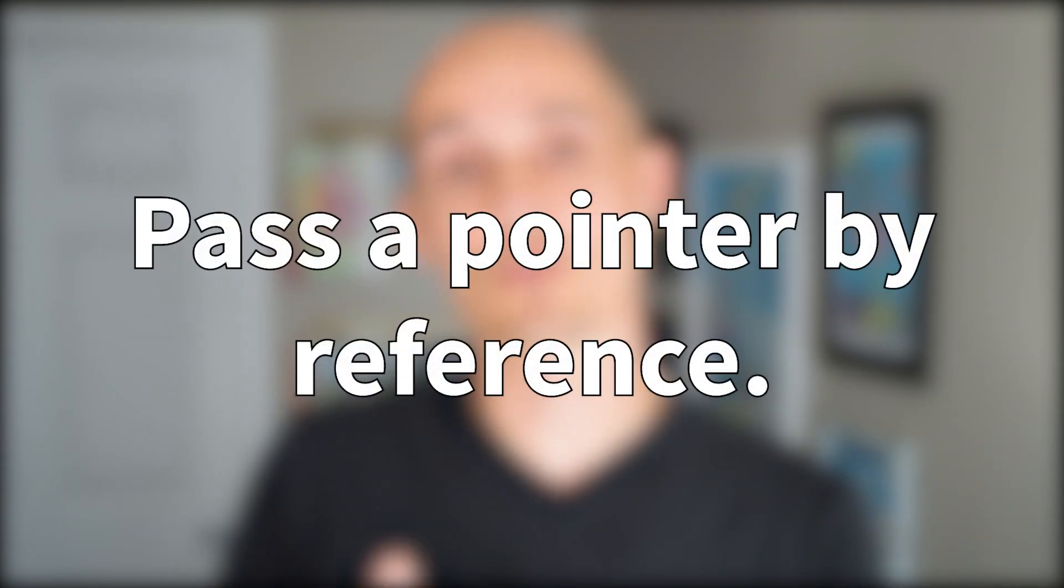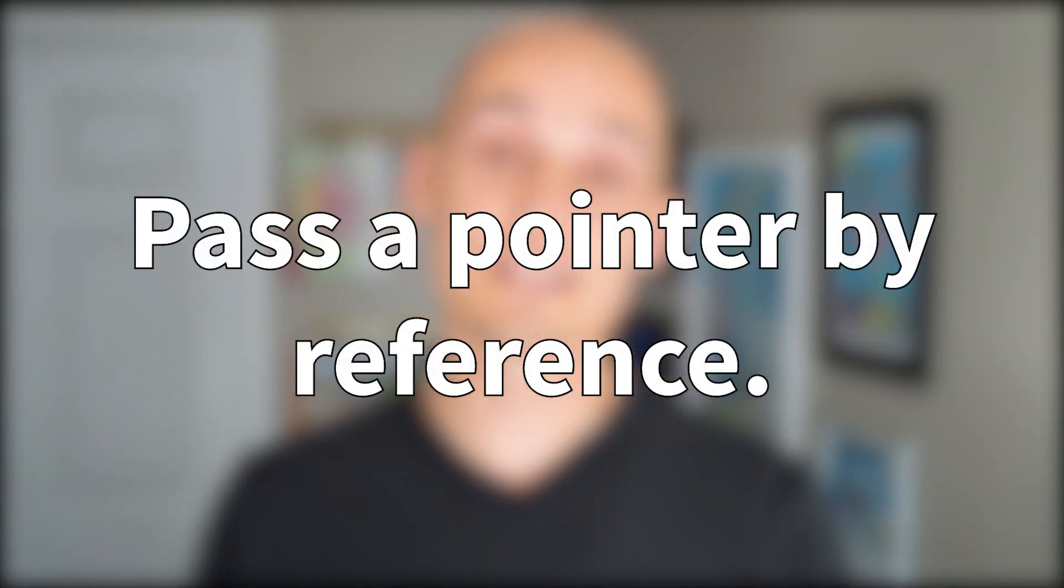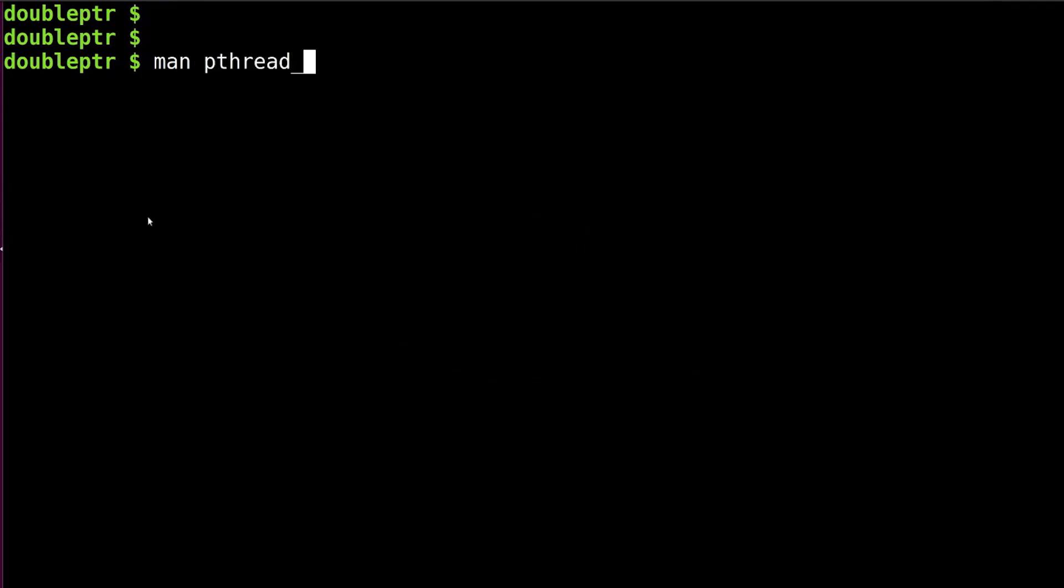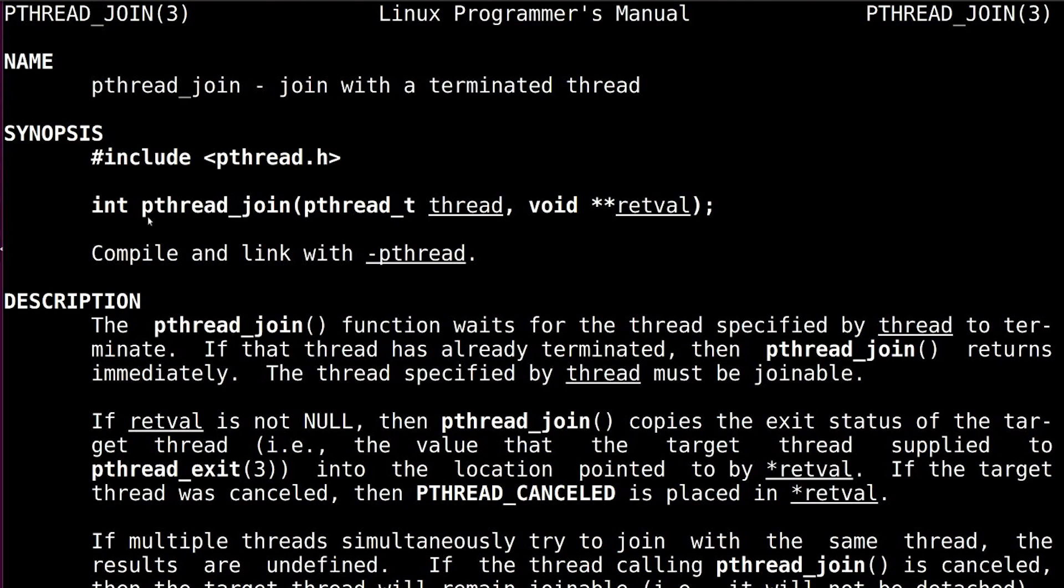The first is when you want to actually pass a pointer by reference to another function. You can see this in the pthread_join function, which is shown right here. If you're not familiar with it, pthread_join waits for a thread to finish running. And then if you want, it will give you the thread's return value.